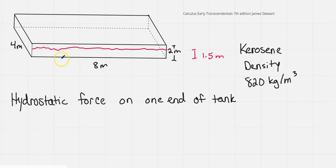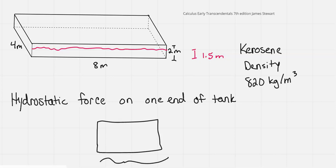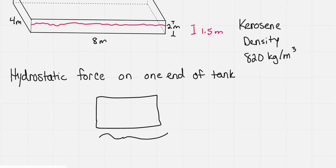So the force on the end of the tank, let's look at this end where it's 4 meters wide. If I pull off and just do a quick sketch of that, I'd have 2 meters high and 4 meters wide. My kerosene is only going 1.5 meters high. The atmospheric pressure on top we are ignoring, but it is a 2 meter high tank.